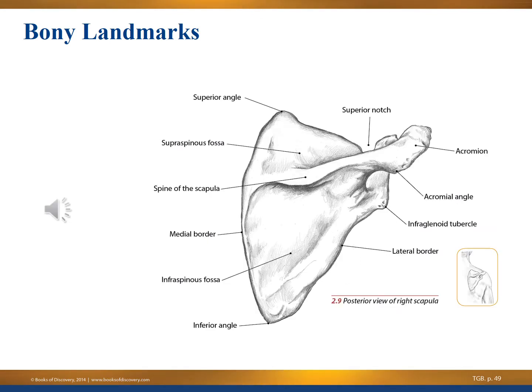This image shows the posterior view of the right scapula — the view we're used to seeing as body workers when someone is lying prone. Working from the superior angle down the medial border, note the spine of the scapula — a great bony landmark, because right under it is where the infraspinatus lives in the infraspinatus fossa. The inferior angle leads to the lateral border, and out at the edge is the acromion, again part of the scapula. The supraspinous fossa is where the supraspinatus lives.